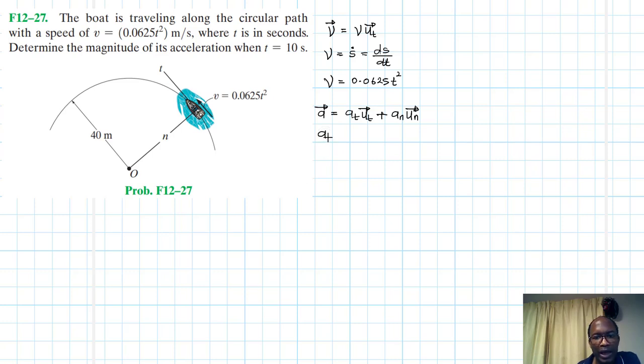Where at, the scalar quantity here, is equal to v dot, and this is equal to dv dt.